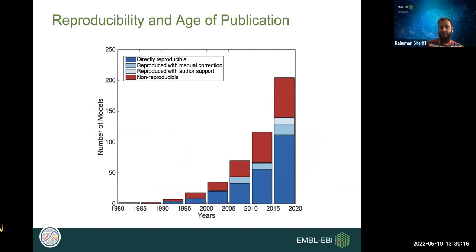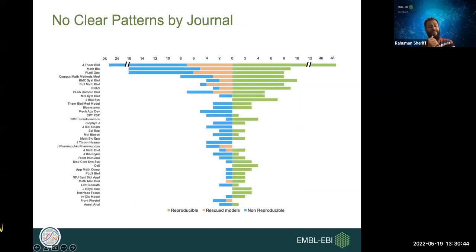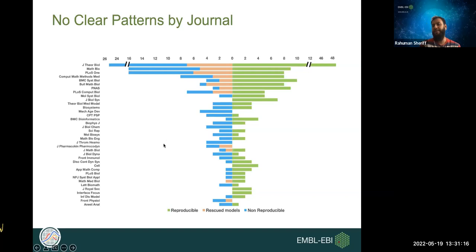Looking at reproducibility across the age of publications, the proportion of reproducible and non-reproducible models is fairly similar across all age groups, though authors are more likely to respond for recently published models. Comparing across journals, there is no clear pattern — some journals have equal proportions of reproducible and non-reproducible models; some at the bottom of the chart have all reproducible or all non-reproducible, but with too few models to draw conclusions. The problem appears to lie in the peer review process itself, which is common across all journals.